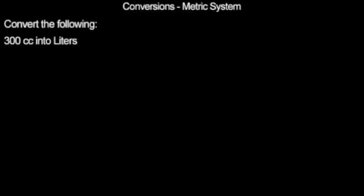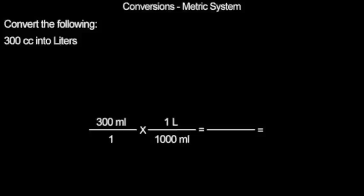For our first example, we will be converting 300 cubic centimeters into liters. In order to do this, we need to set up an equation. First we add to our equation what we already have, which is 300 cubic centimeters, or 300 milliliters. Since 1 liter is equal to 1000 milliliters, we are essentially multiplying our original value by 1. This way we can change our unit from milliliter to liter without changing the value. It is important to have milliliters as the denominator of this fraction, so we can cancel out the numerator of our previous fraction. We can then multiply across and end up with 300 liters over 1000. When you divide, you end up with 0.3 liters, which is equal to our original 300 cubic centimeters.